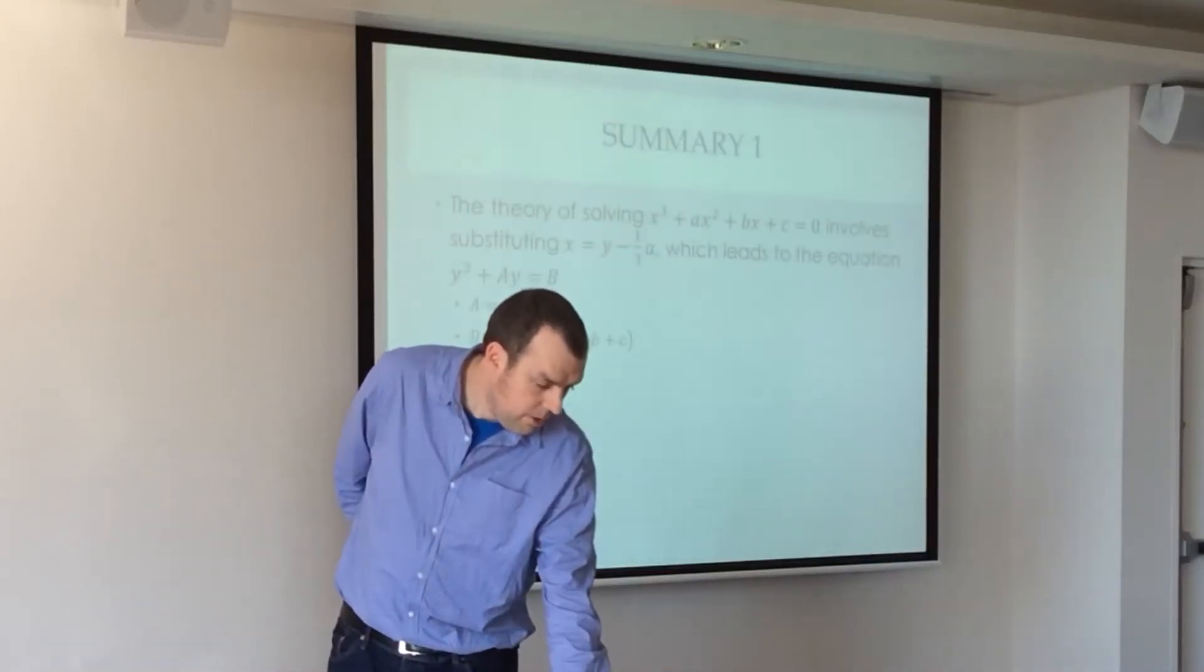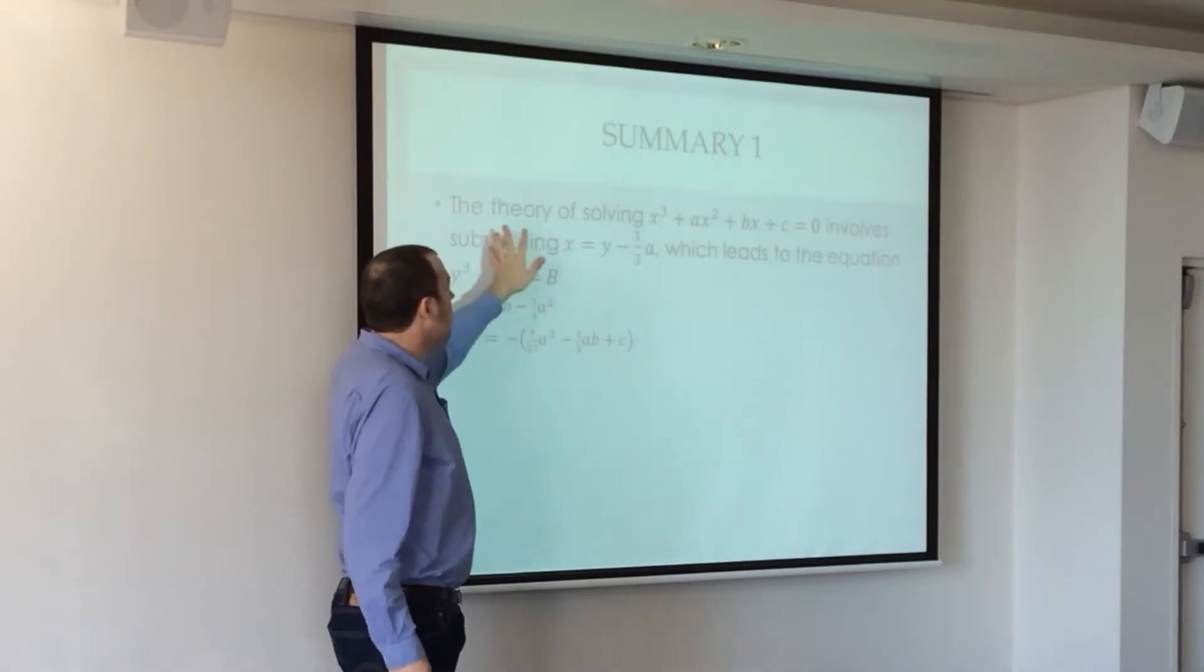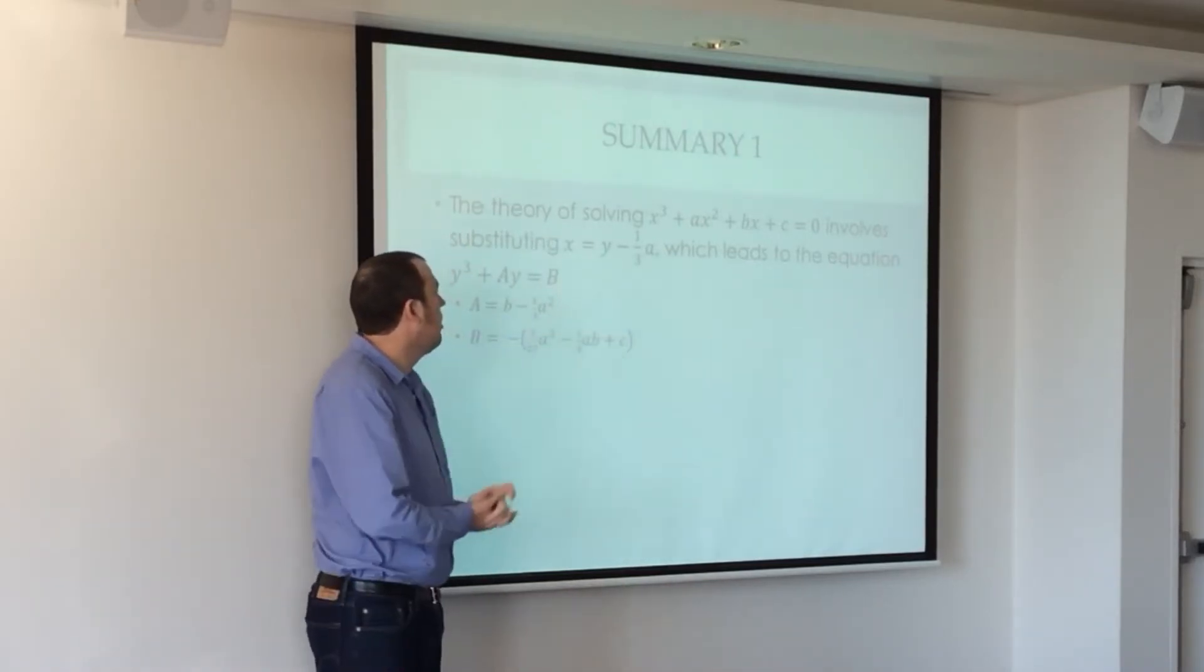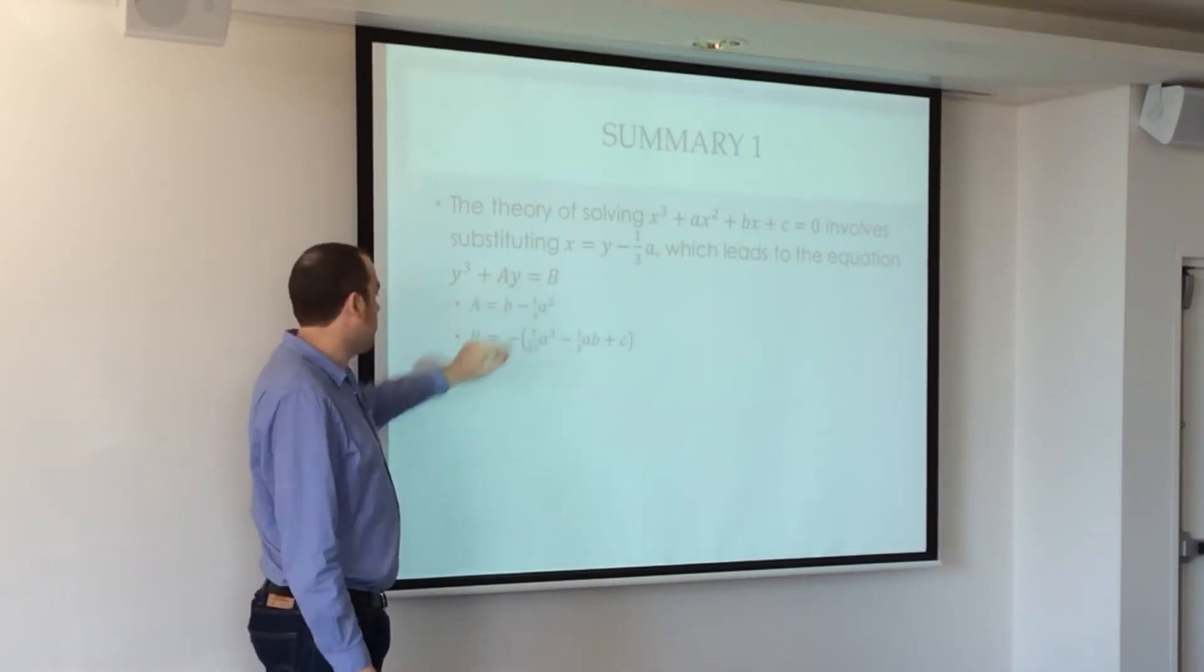All right, just a quick summary of the solving. So the theory of solving the general cubic involves that substitution: x equals y minus 1/3 a. It leads to this equation, the depressed cubic,